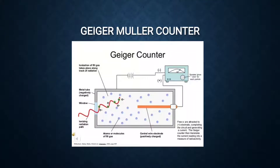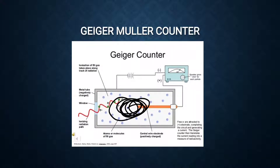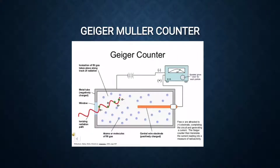This is a diagram of the Geiger-Müller counter. It consists of a cylindrical metal tube serving as the cathode and a central wire inside the tube serving as the anode. Argon gas is filled in the tube at a reduced pressure of 0.1 atm, and a potential difference of 1000 volts is applied across the two electrodes.